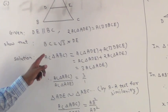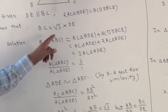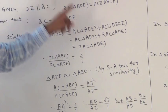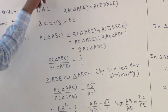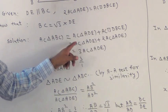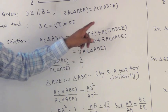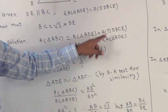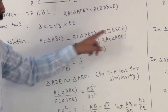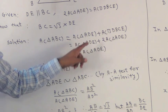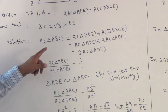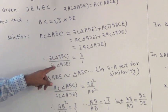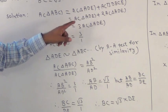For the solution, we know that area of triangle ABC equals area of triangle ADE plus area of quadrilateral DBCE. Substituting the value of the quadrilateral, we get area of triangle ADE plus 2 times area of triangle ADE, which becomes 3 times area of triangle ADE. So the ratio of area of triangle ABC to area of triangle ADE is 3:1.